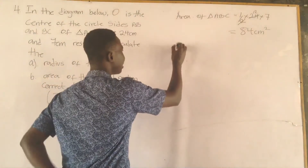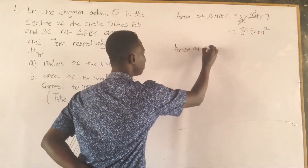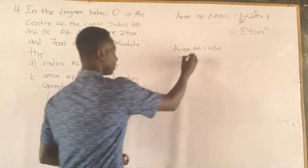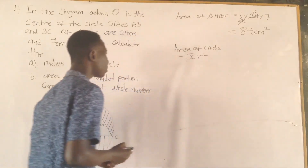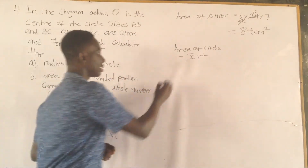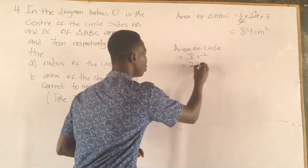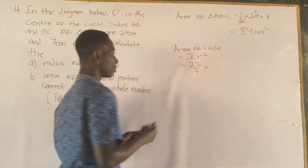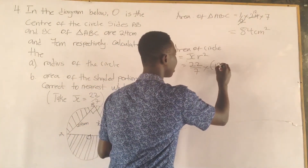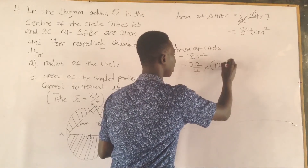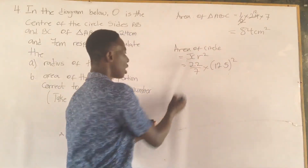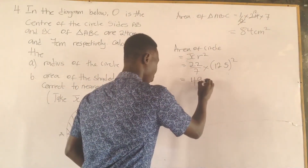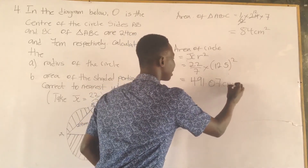Now we find the area of the circle. Area of the circle equals pi r squared. Pi is 22 over 7, and the radius is 12.5. So the area equals 22 over 7 times 12.5 squared, which gives us 491.07 centimeters squared.